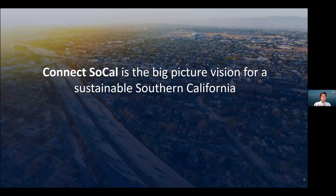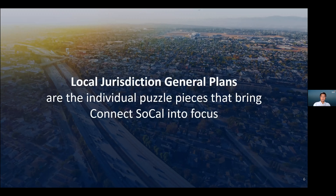That common vision is embodied in our recently adopted long-range plan called Connect SoCal — our flagship regional transportation plan and sustainable community strategy, also known as RTP-SCS, charting a vision for 2020 to 2045. The goals of Connect SoCal can only be realized if the individual cities and counties that make up the region are working collaboratively to create more sustainable communities. Local jurisdiction general plans are the individual puzzle pieces that bring Connect SoCal to fruition and provide SCAG with up-to-date, on-the-ground data for land use so SCAG can do more accurate planning and forecasting.